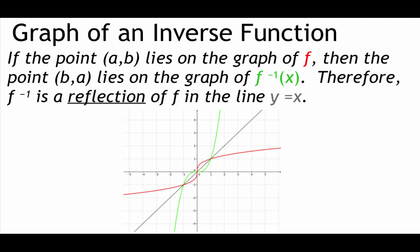The last thing we're doing in this video is taking a look at the graph of an inverse function. Going back to thinking about ordered pairs: if the point A, B lies on the graph of our original function f, then the point B, A should be on the graph of the inverse of f, since we've been flipping those ordered pairs around. That makes the inverse a reflection around the line y equals x. Down the middle of the picture I have the line y equals x — the red graph is our function f, and the green graph is our inverse of f, so we can see it's a reflection around that line.